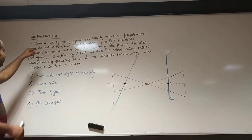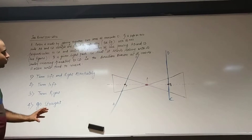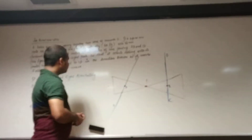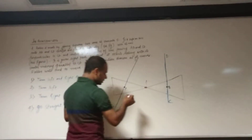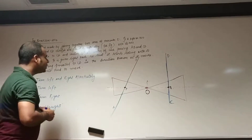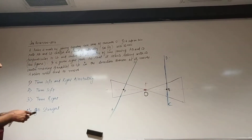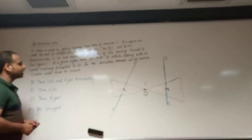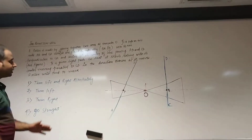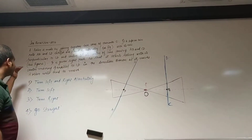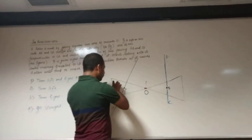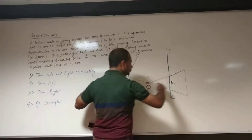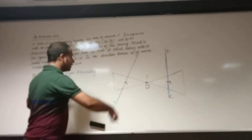Let me read out this problem for you. A roller is made up of joining two cones at their center. So we have two cones whose centers are connected, and this point has been named as O. It is kept on two rails AB and CD, which are placed symmetrically with the axis of the cones perpendicular to CD.